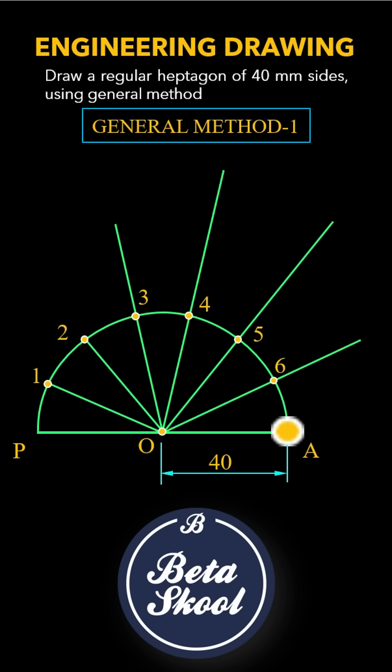Now, with center A and radius OA, draw an arc to extended line O6. Mark the intersection as point B. Similarly, with center 2 and radius OA, draw an arc to extended line O3. Mark the intersection as point E.